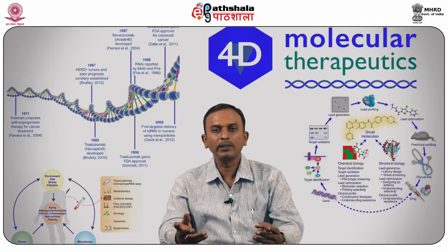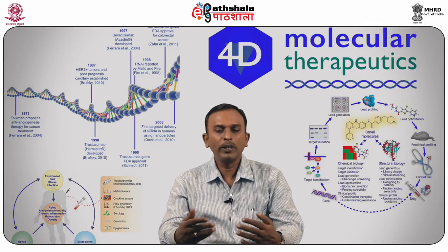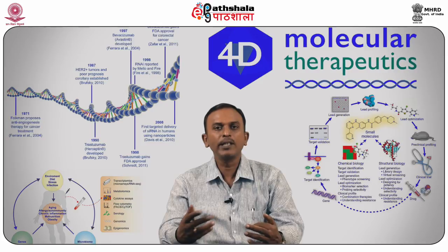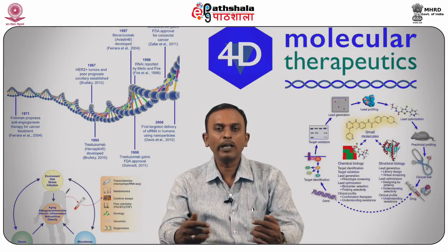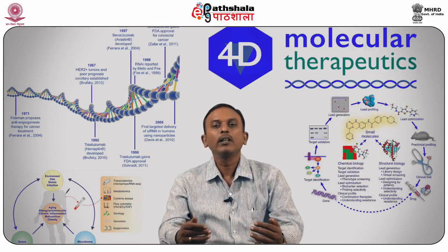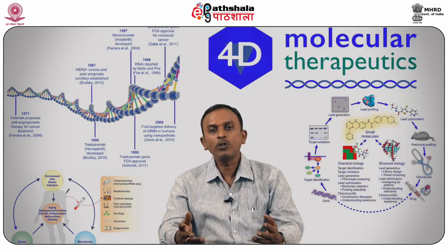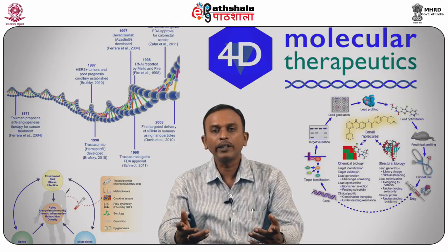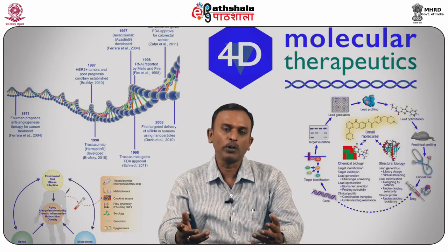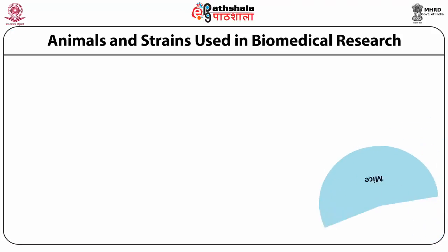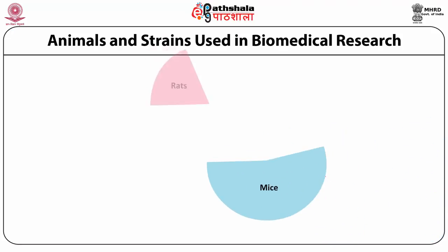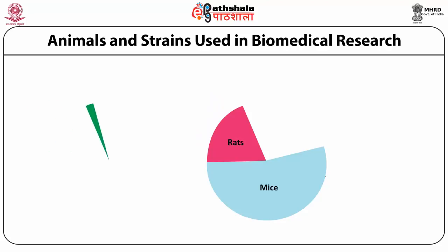The gestation period is 21 days — you can get enough pups every 21 days. The animals will continuously get pregnant after delivering, and they have a large litter size. The mouse genome is closely related to the human genome, and we have extensive genetic knowledge of mouse models.